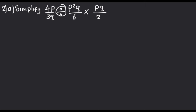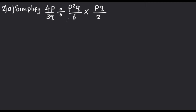For a question like this one, we need to make sure that we only have one operator, which is multiplication. So I'm going to begin by first expanding, then the second step will be changing the division operator into a multiplication operator. After that, the fraction that comes after the division sign must be flipped.